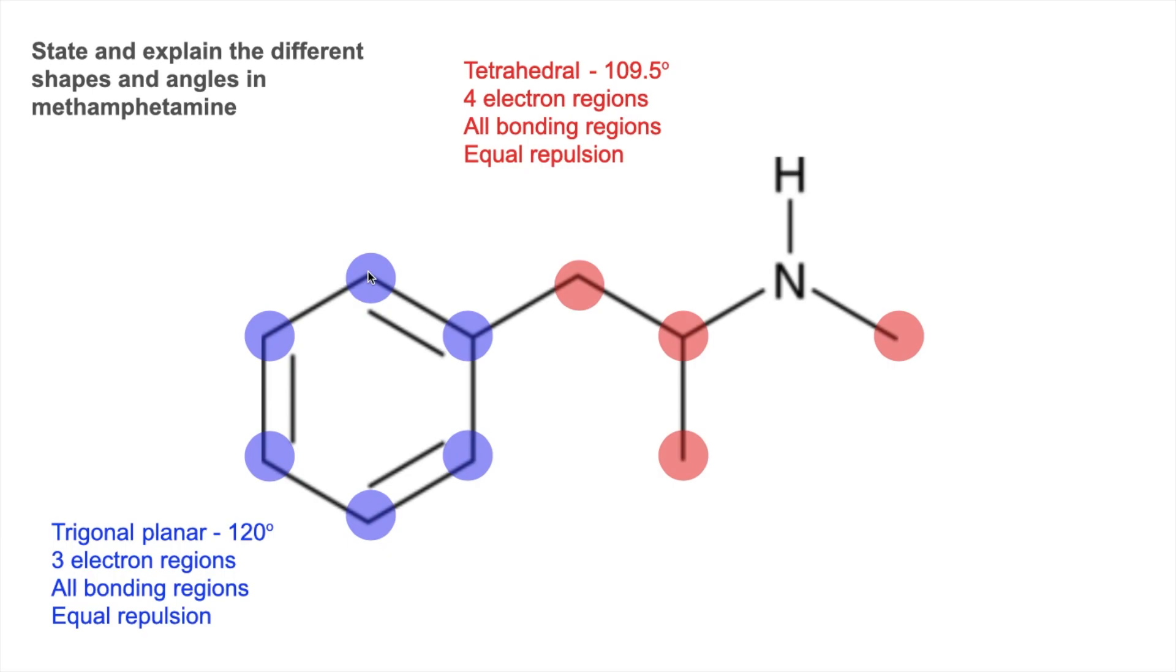That's a second bonding region. And the double bond to this carbon, we treat that as one region. So you've got three electron regions. They're all bonding. So they repel each other equally.